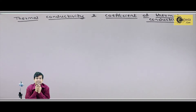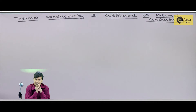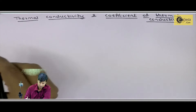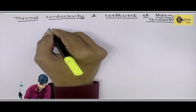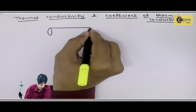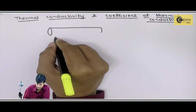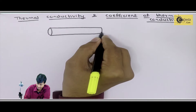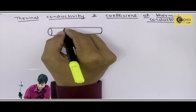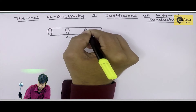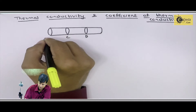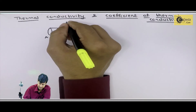Here we will find the same rod and check temperatures to see how heat transfer occurs. We will see a metal bar where one part is C and the other part is D. The total metal bar is AB.